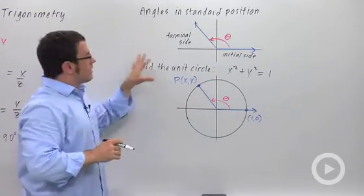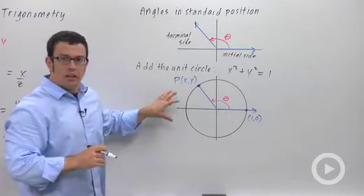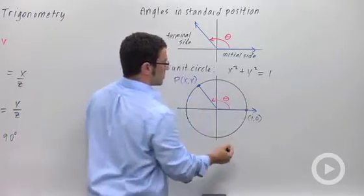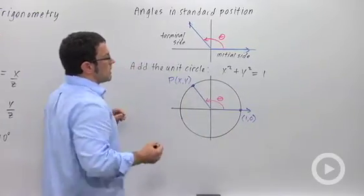Now, add to that angle in standard position the unit circle. The circle with radius 1, x squared plus y squared equals 1. This circle here.